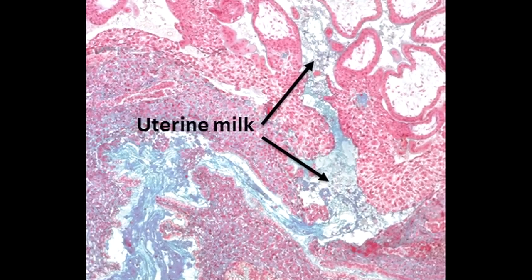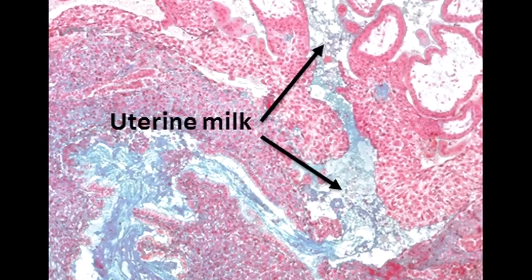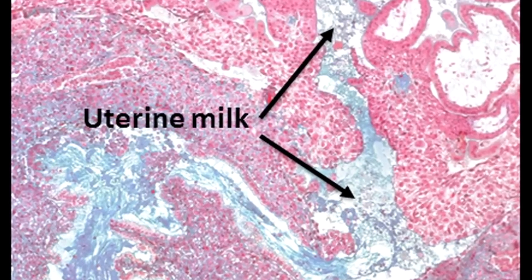When the maternal blood supply to the placenta does start, the oxygen concentration rises threefold. This poses a major challenge to the placental tissues as oxygen is a highly reactive gas.